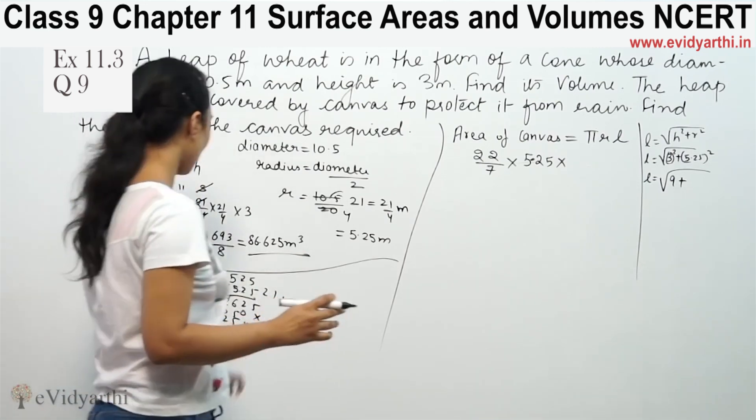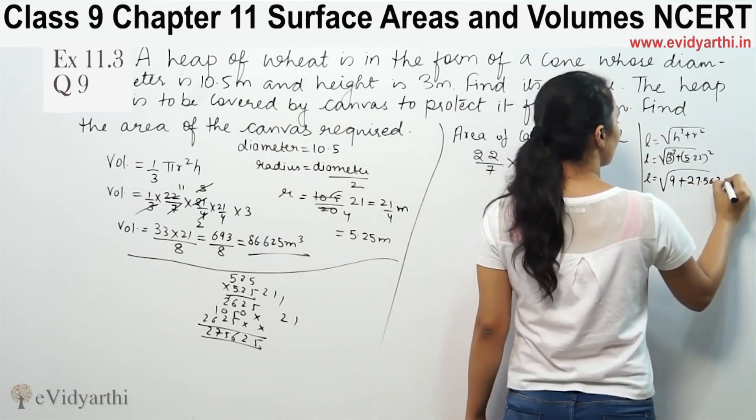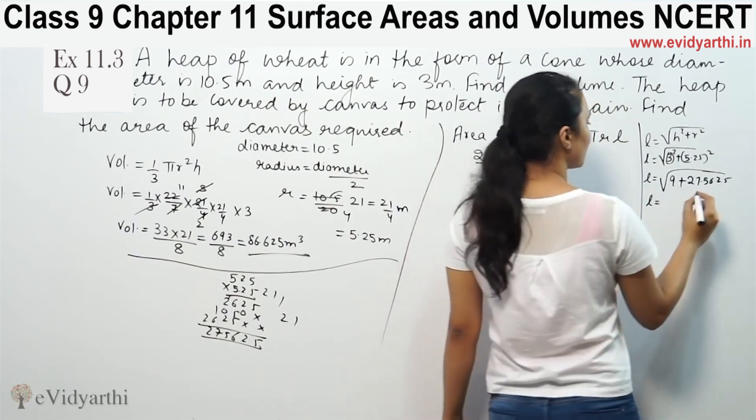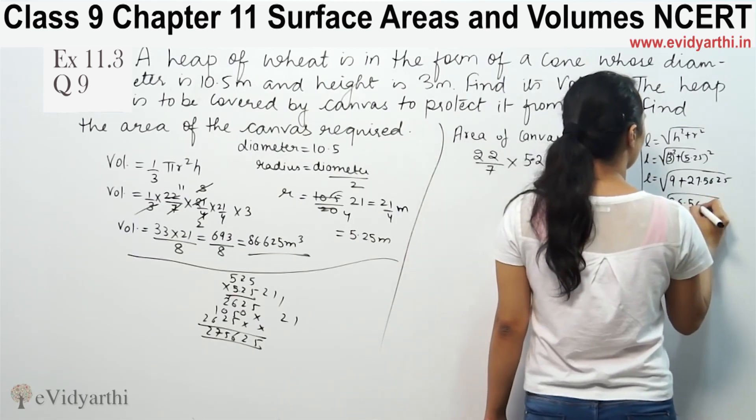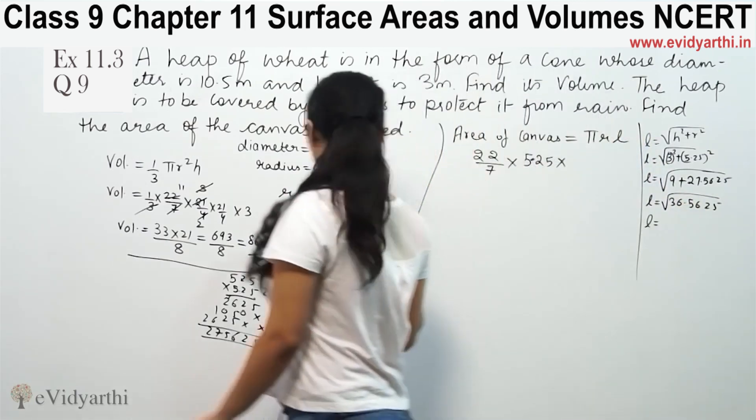So this is the square root of 36.5625. Calculating step by step, this equals 6.046 approximately, which we can round to 6.05.